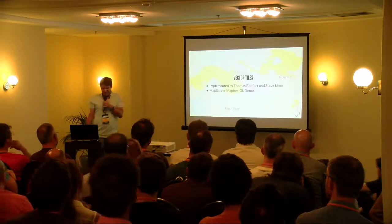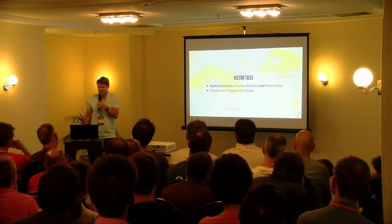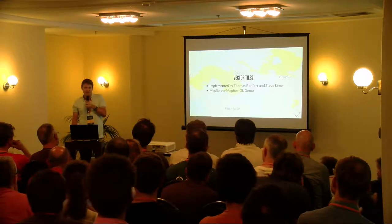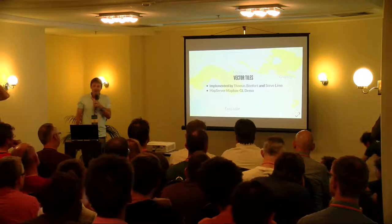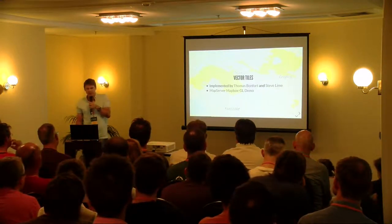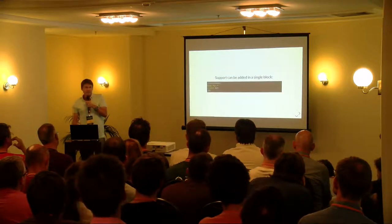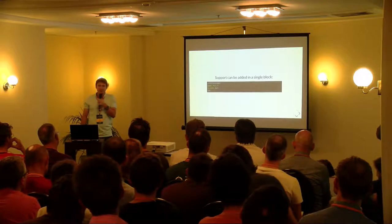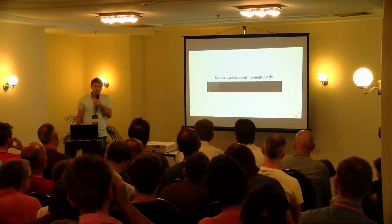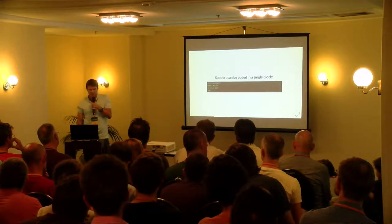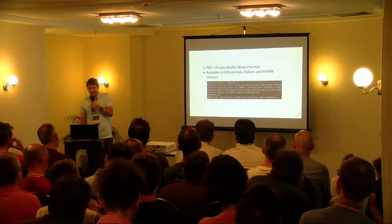The main feature people were waiting for was vector tiles. This was written by Thomas Bonfort and Steve Lime got it in at the end. Steve Lime's also got a MapServer demo on GitHub — there's a demo using a MapServer backend and the MapBox GL client, so you can test the vector tiles. Vector tile support can be added into a map file — MapServer is driven by its own configuration language in text files. To add vector tiles, you just add in an output format block — it's only four lines and then you've got MapBox vector tile support.